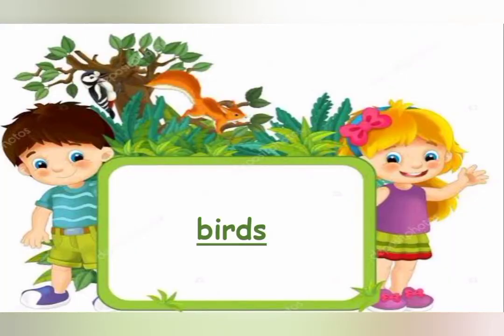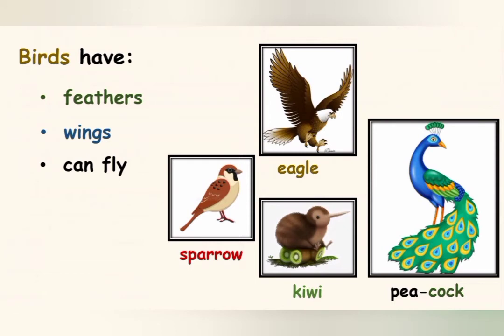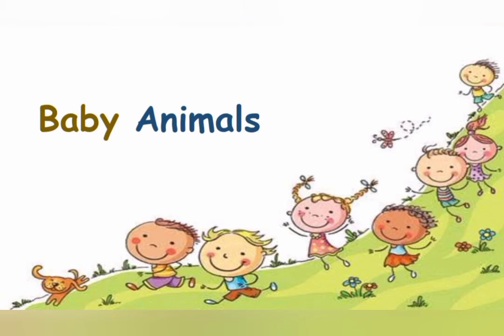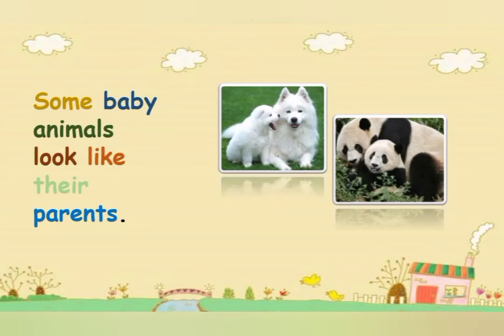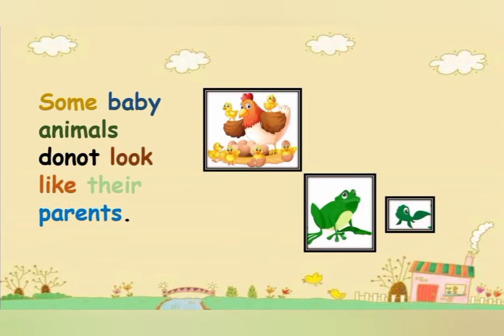Let's talk about birds. Students, birds have feathers and wings. اور کچھ جانور انڈے دیتے ہیں. جب وہ انڈے hatch کرتے ہیں تو baby animal comes out. Normally وہ baby animal اپنے parents کے جیسا نہیں ہوتا.